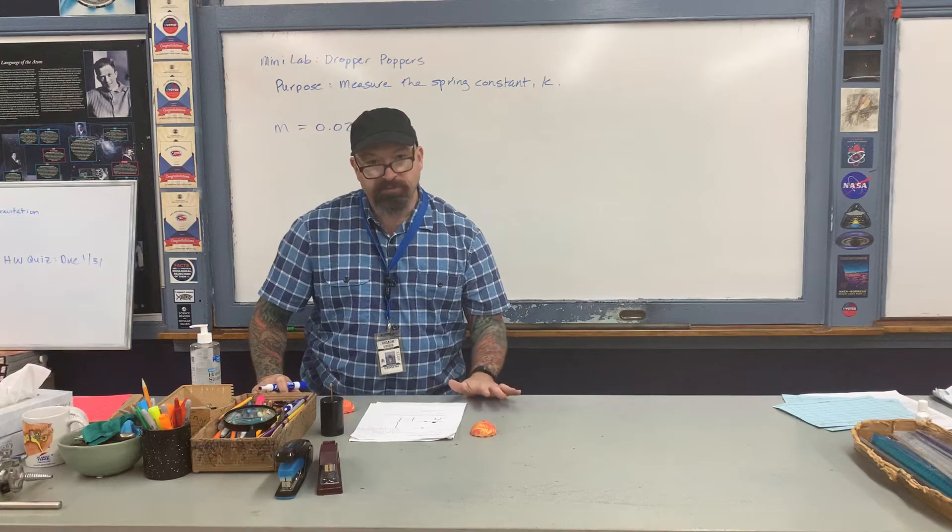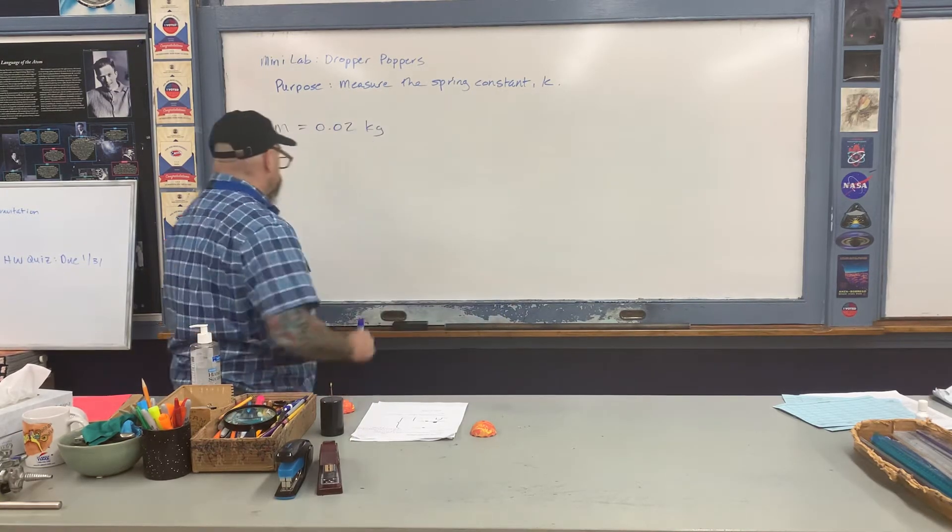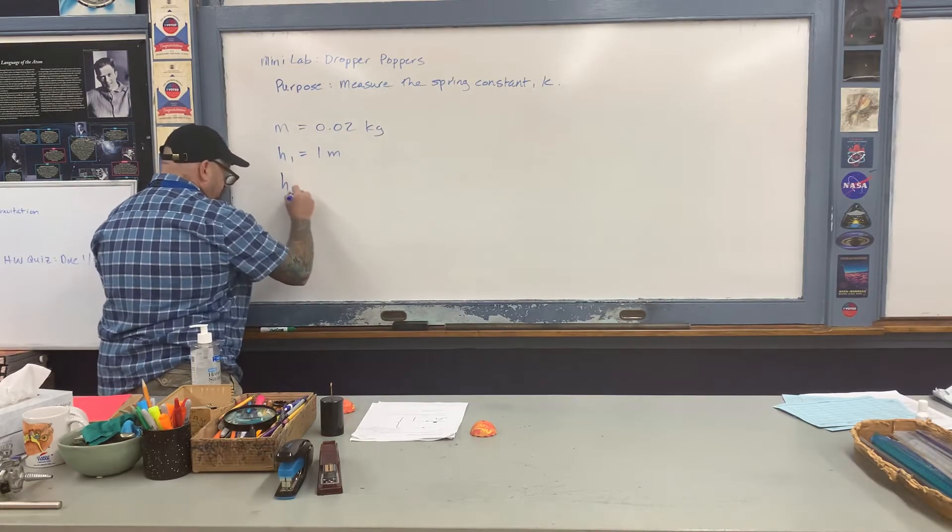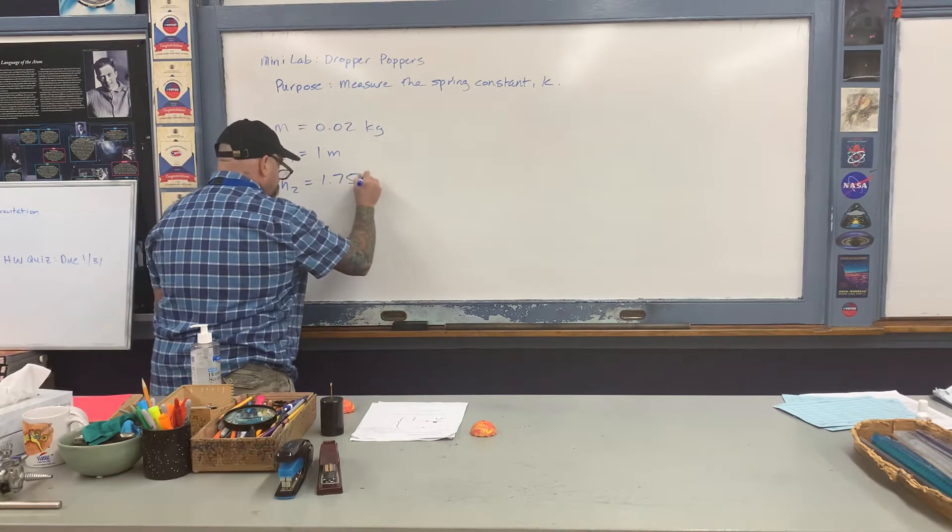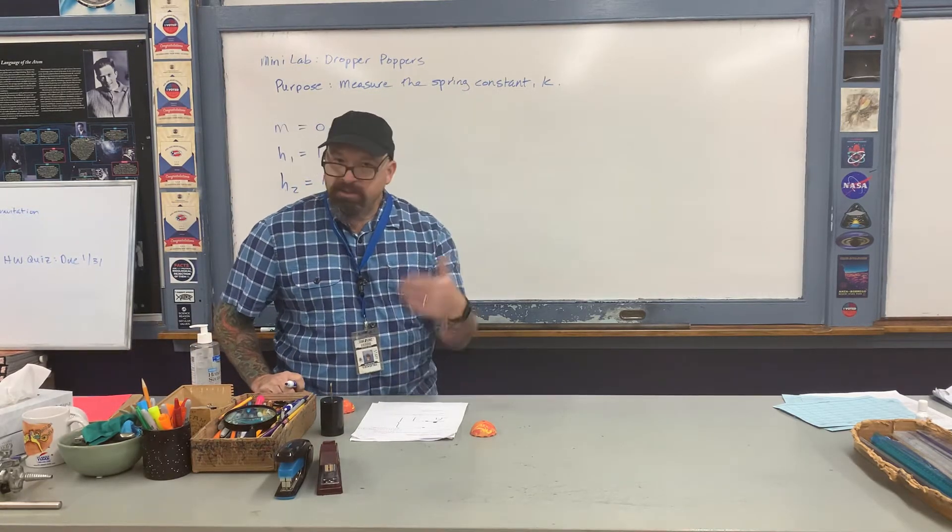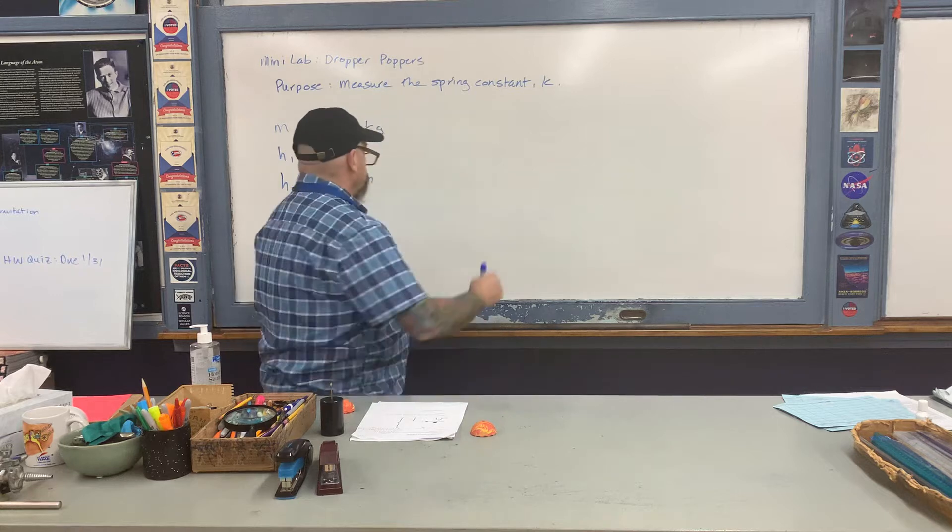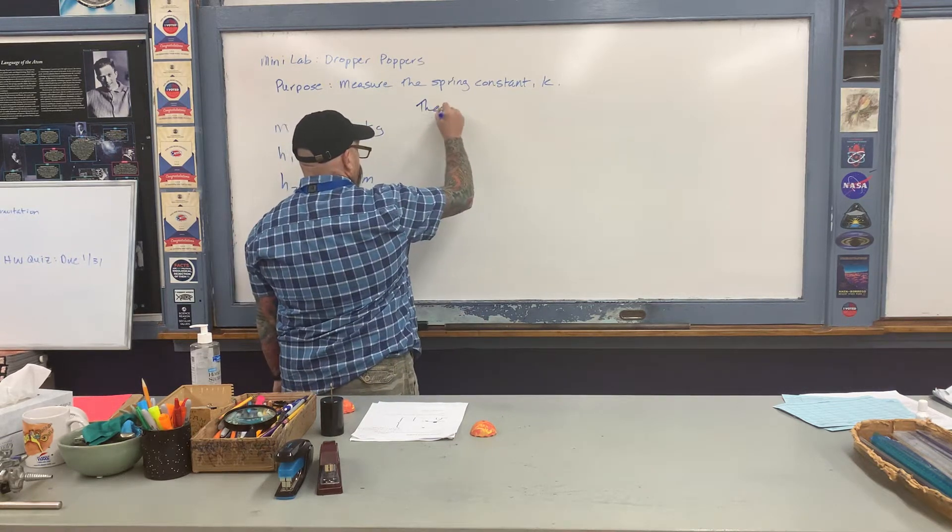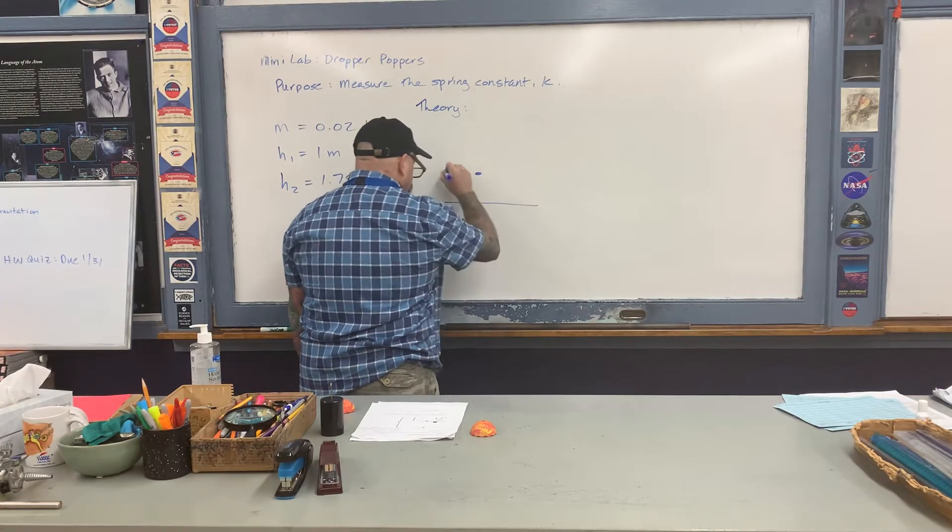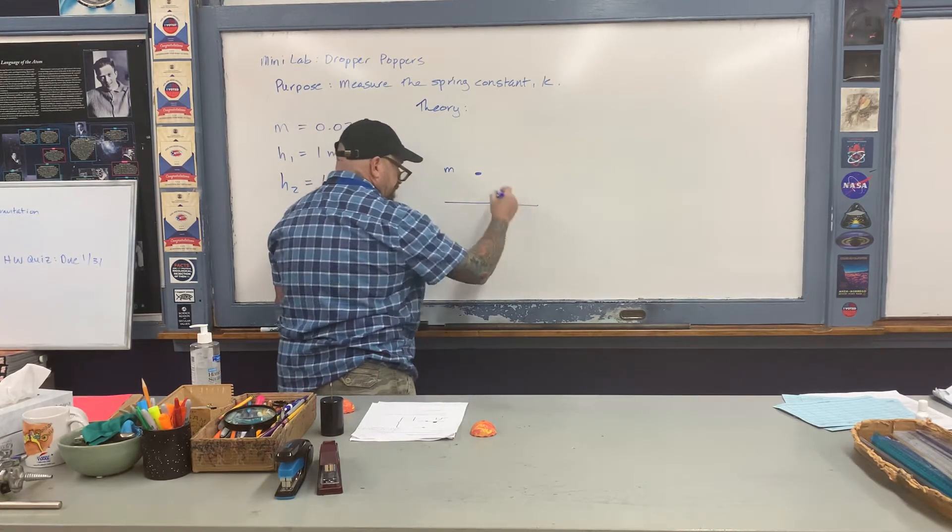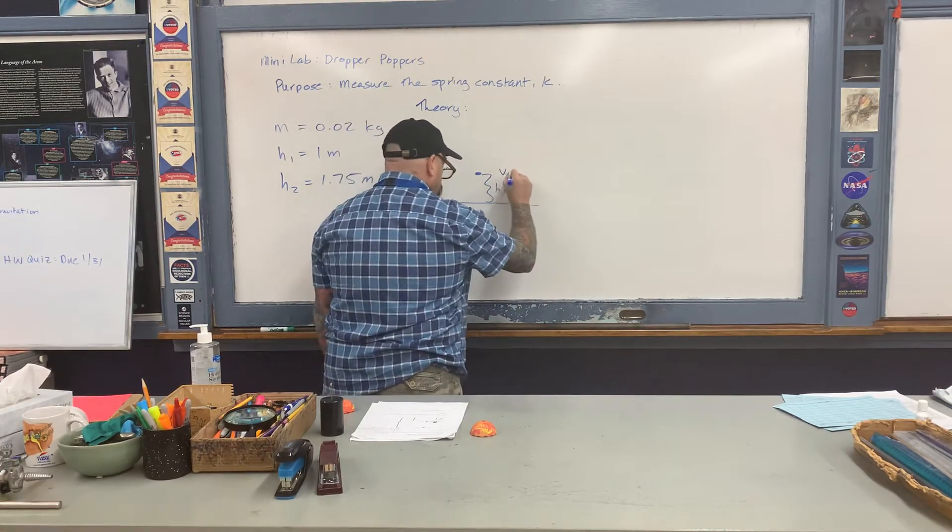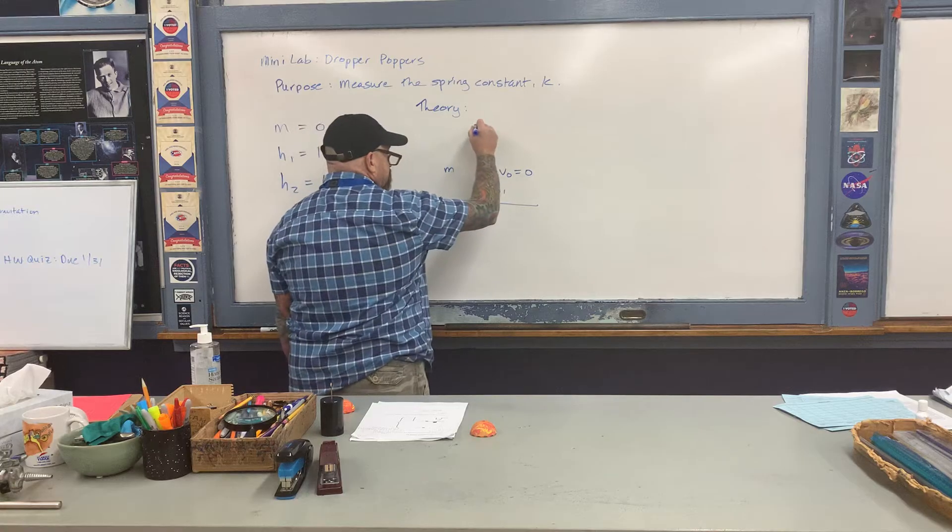Then I have the two heights I mentioned. The first height I dropped the popper from is referred to as h1—that was one meter. Then the height I caught it at was 175 centimeters, that's 1.75 meters. Here's the basic theory behind the exercise: Let's say right here is the popper when I drop it from this height h1 above the floor, releasing it from rest.